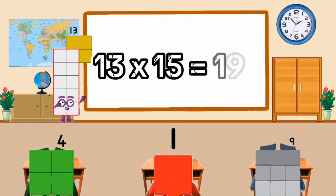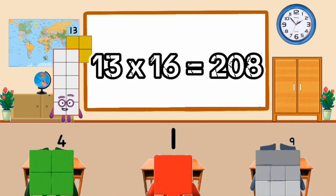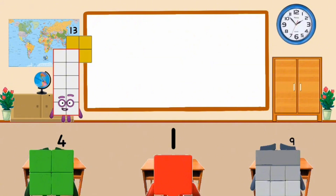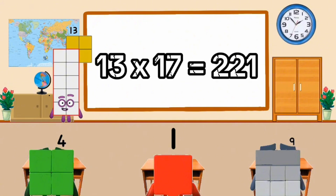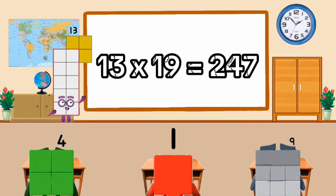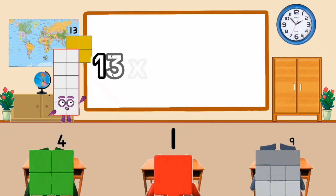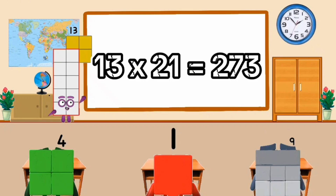13 times 14 equal 15. 13 times 14 equal 156. 13 times 16 equal 208. 13 times 17 equal 121. 13 times 18 equal 234. 13 times 19 equal 247. 13 times 20 equal 260.